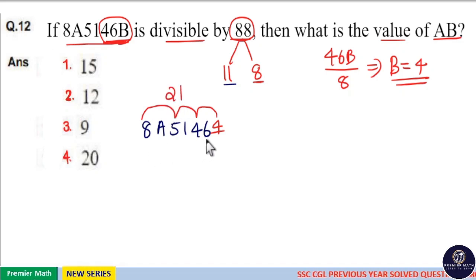Now, take the even place sum. 6 plus 1 is 7. 7 plus A is the even place sum.